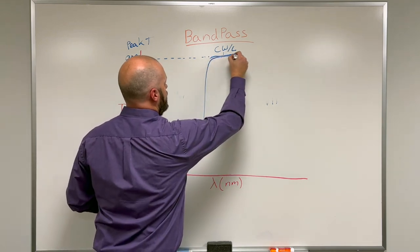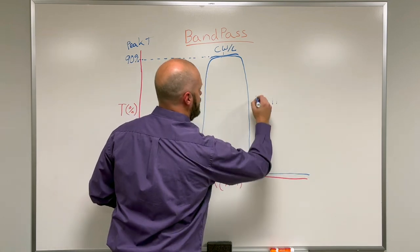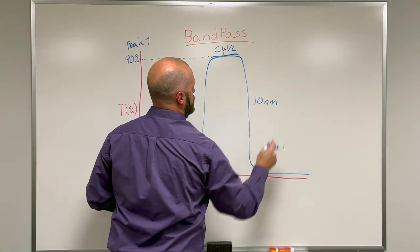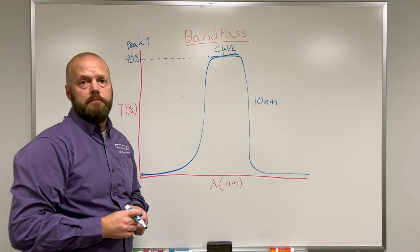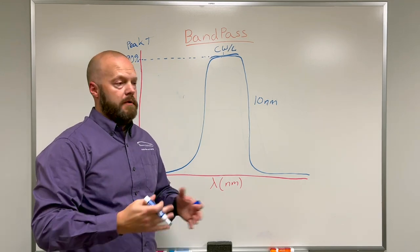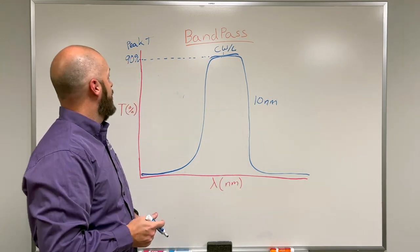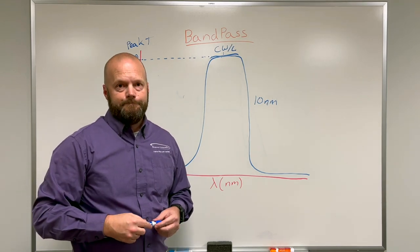But back to the beginning, most typical is a three cavity, 10 nanometer wide bandpass filter. Very industry standard, machine vision, astronomy, anything. 10 nanometer wide bandpass filter is pretty standard.